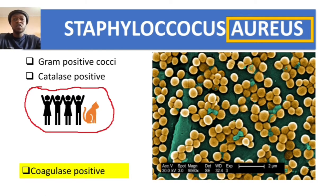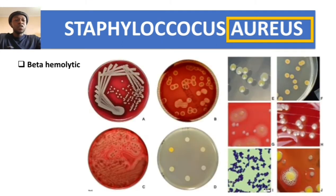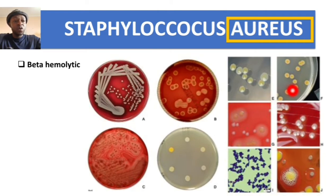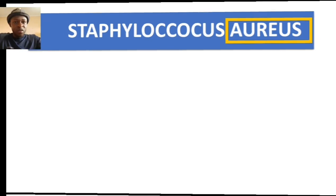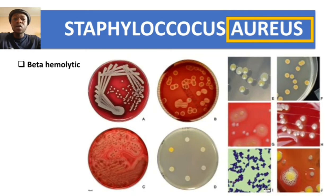Staph aureus is coagulase positive and also beta-hemolytic. On blood agar you can see complete hemolysis — a clear zone around the golden yellowish colonies.